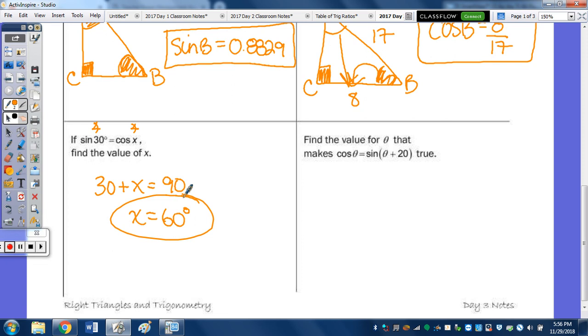On the right side, find the value of theta that makes the statement true. It's saying that the cosine of theta is equal to the sine of theta plus 20. Again, if the sine of any angle is equal to the cosine, those angles, that's only true when the angles are complementary. So we take theta and add it to theta plus 20 and set it equal to 90. I'm going to subtract the 20, and theta plus theta is 2 theta equals 70. Now divide 70 by 2 and theta equals 35 degrees.